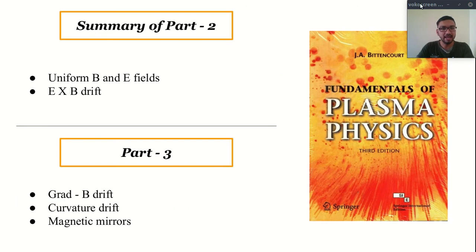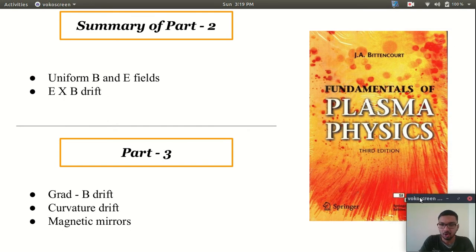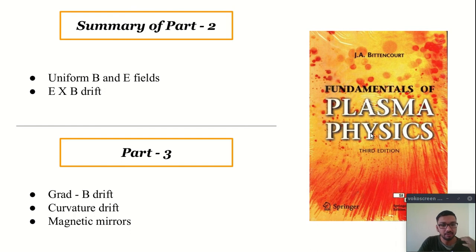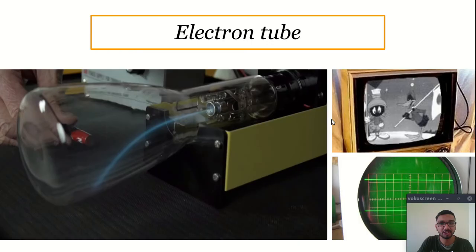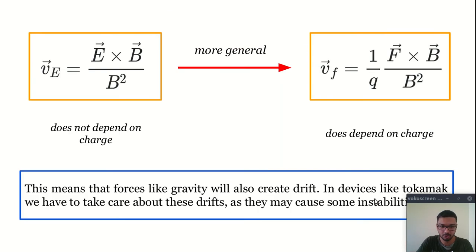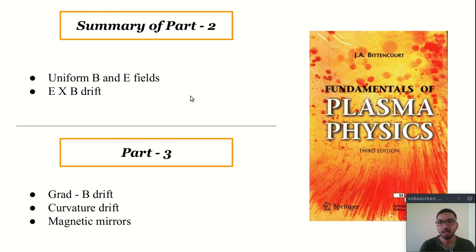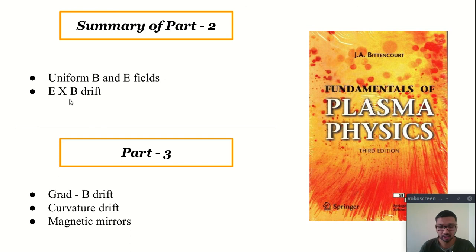This ends the second part — hope you have enjoyed. Before I go, here is the book recommendation: Fundamentals of Plasma Physics by J.A. Bittencourt, and I must mention that I have taken these solutions from this book. In summary, we have discussed the trajectory of charged particles in uniform E and B fields, and we have also discussed E cross B drift. In the next part — part 3 — we will discuss some very interesting phenomena: grad B drift, curvature drift, and magnetic mirrors. See you in the next video — bye for now.